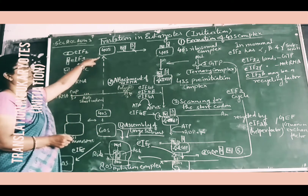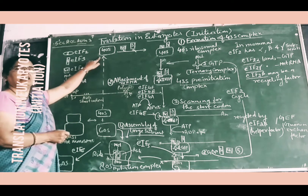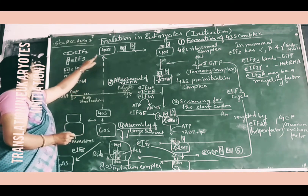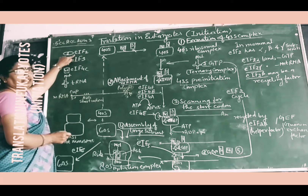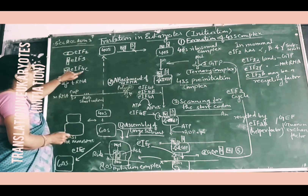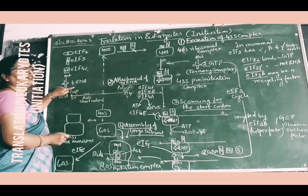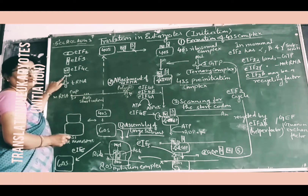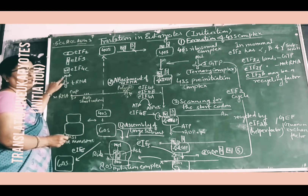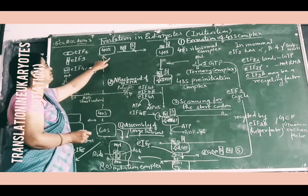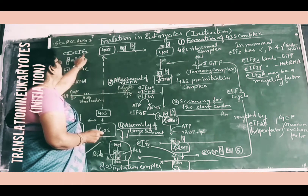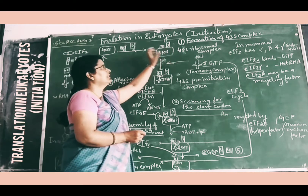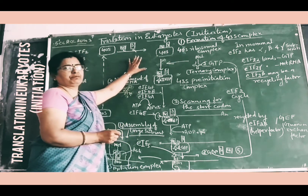The 40S subunit is then available for association with other factors involved in initiation. These include factor EIF2, factor EIF3, factor EIF4C, and the initiator transfer RNA — that is, methionine attached to the first transfer RNA. The 40S ribosomal subunit binds with EIF4C and EIF3 to form the 40S ribosomal complex.